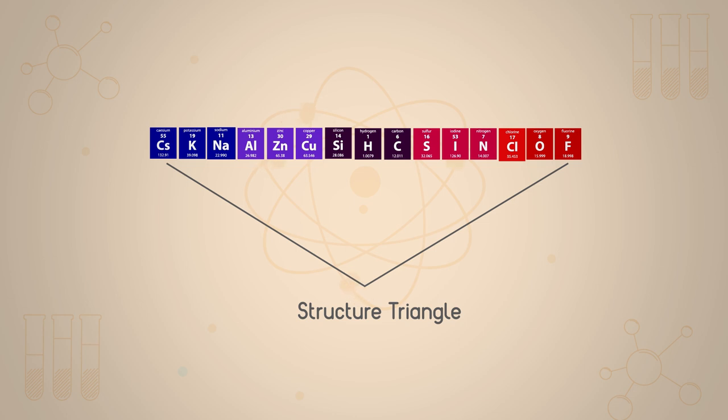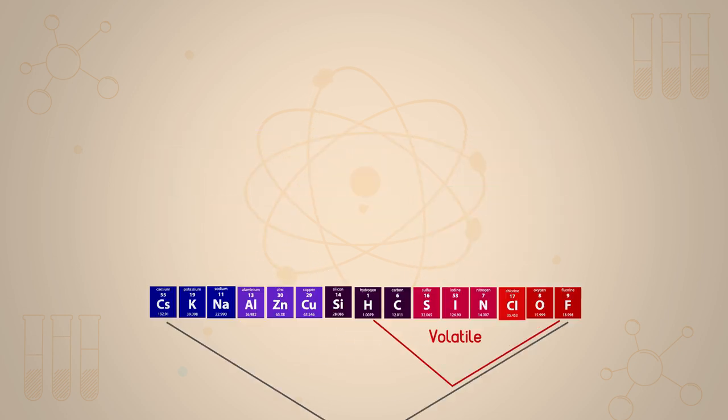When non-metals bond with each other we get small self-contained molecules, substances that are already gases or will vaporize easily. These are called volatile. Don't confuse this with being reactive.